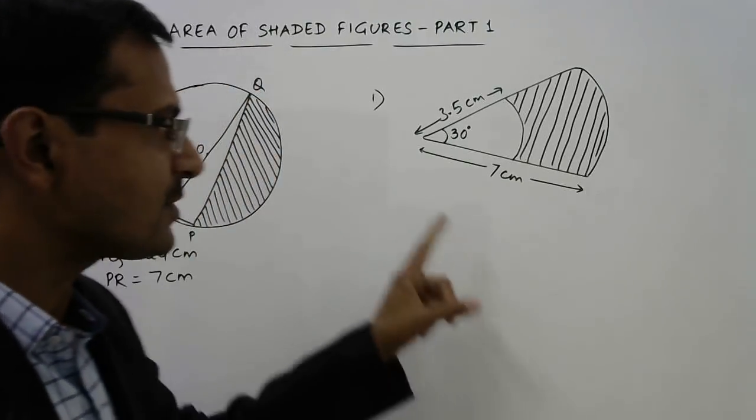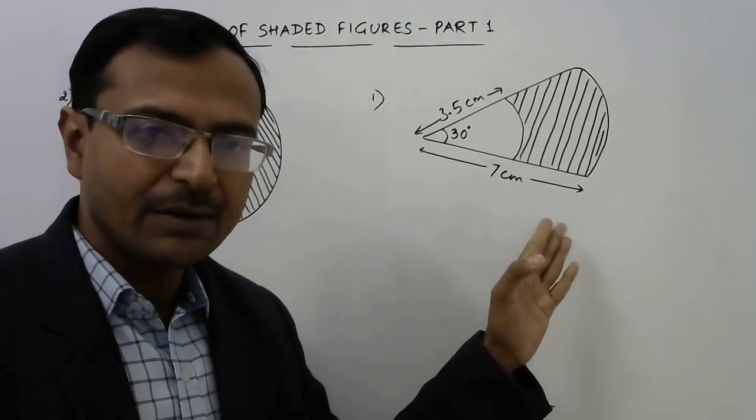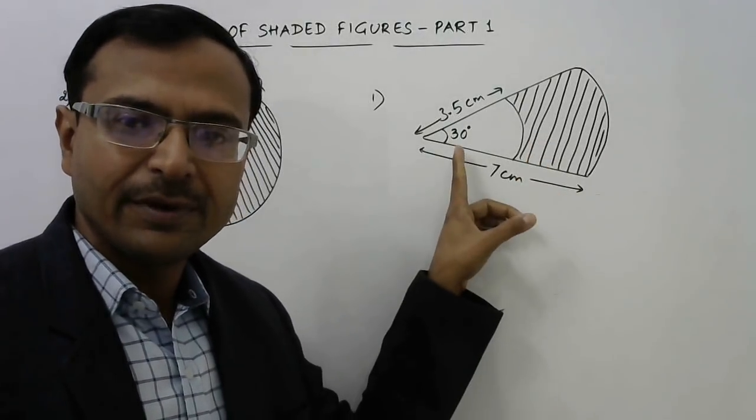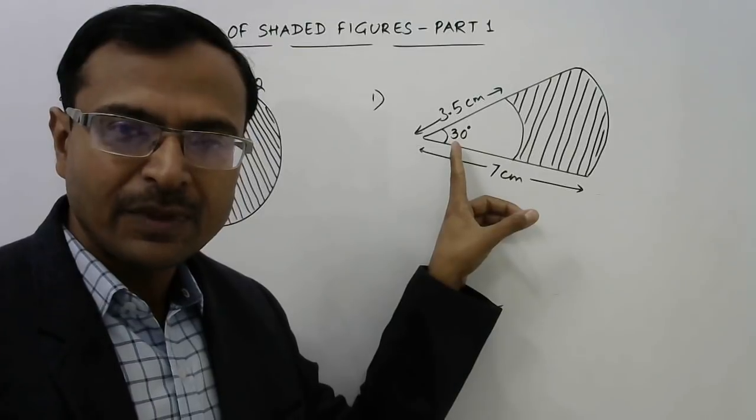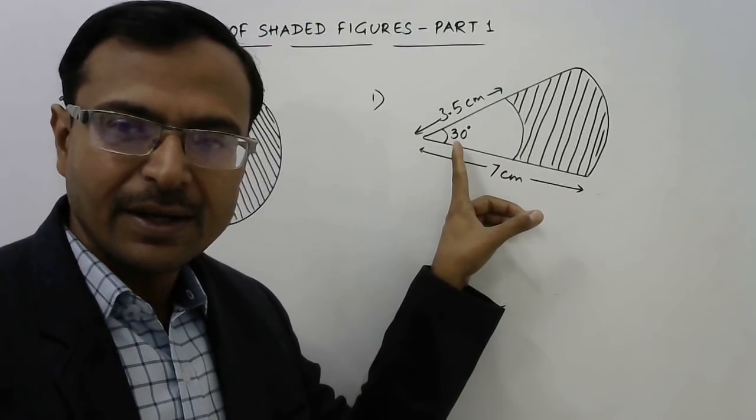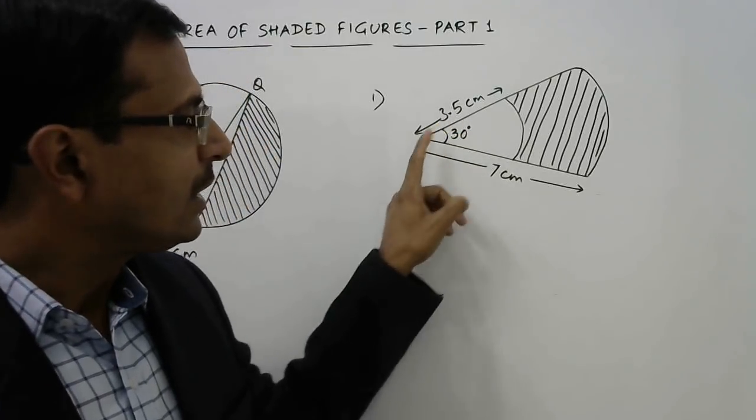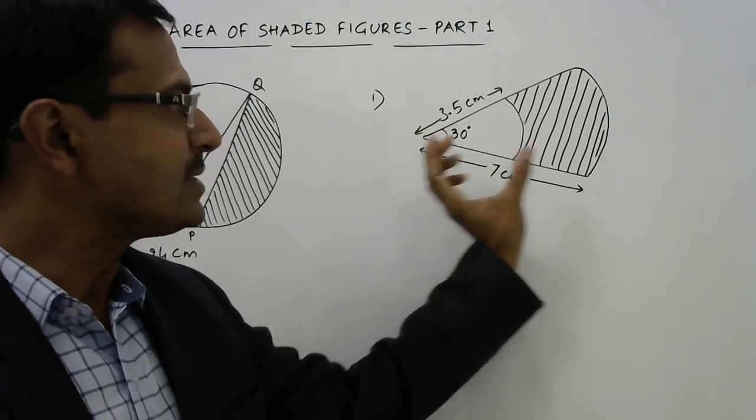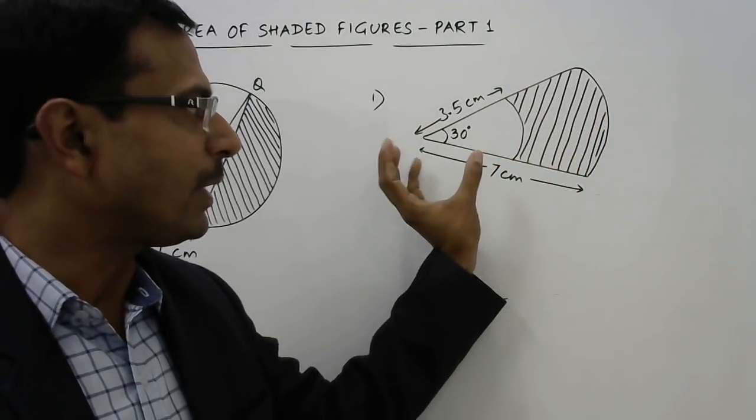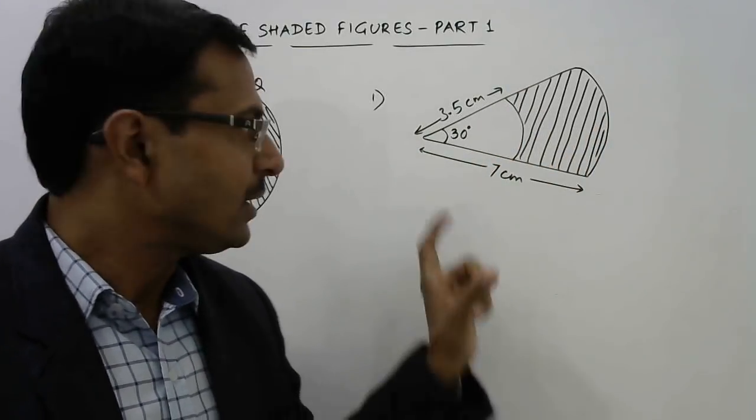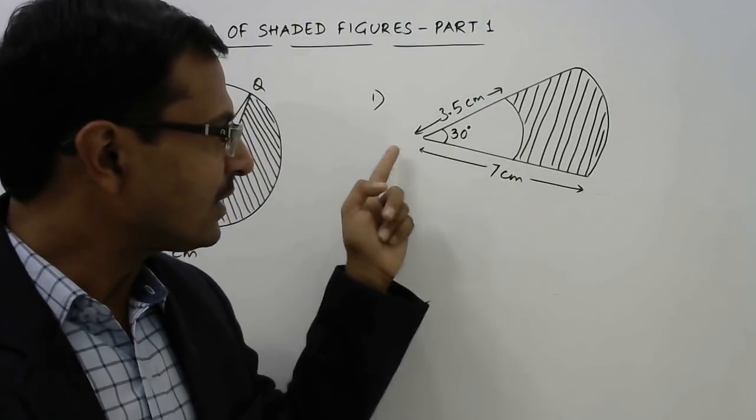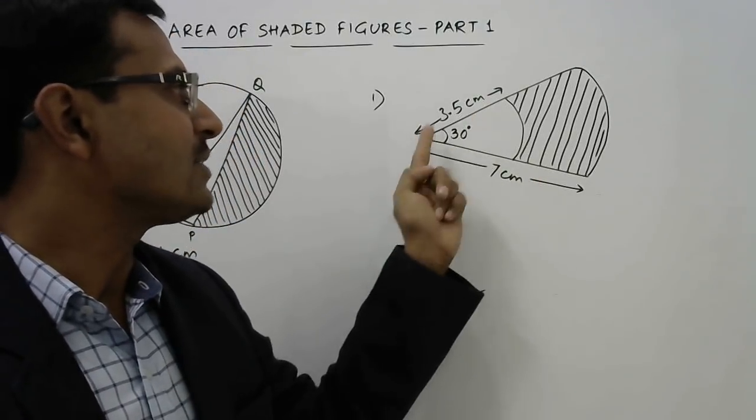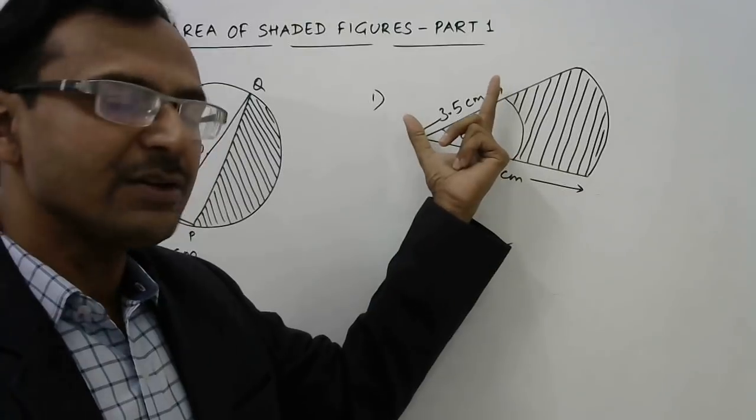Here is the first problem in which we have a sector of a circle of sector angle 30 degrees, and that sector has been divided into two parts - one part is shaded and one part is unshaded. The radius of the larger sector is 7 cm and the radius of the small sector is 3.5 cm.